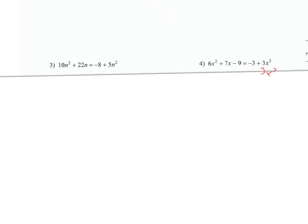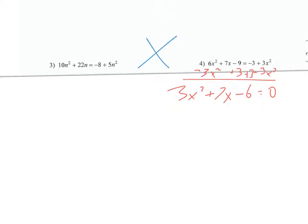Next up, number four. First I want to get one side to zero. I always move everything to whichever side keeps my squared term positive, so I get positive three X squared plus seven X minus six equals zero.